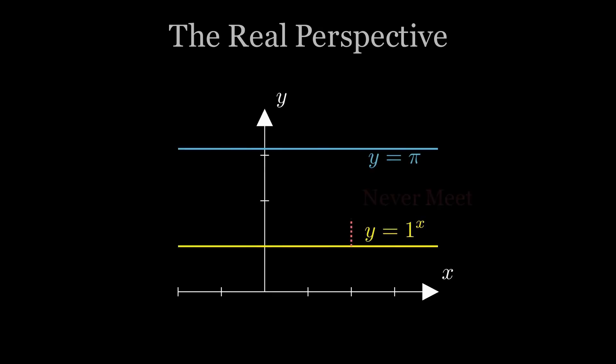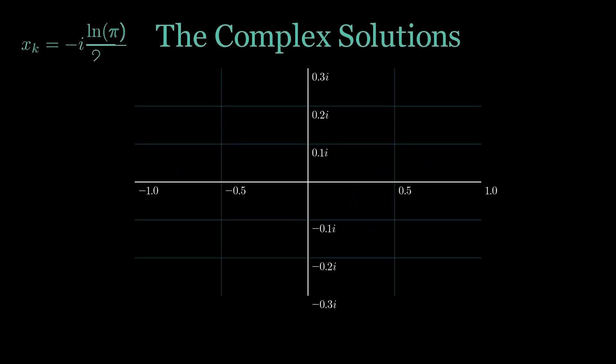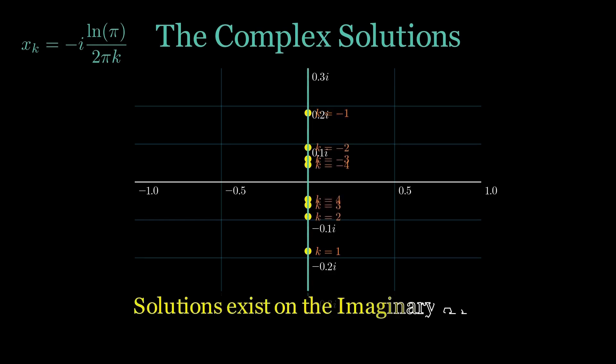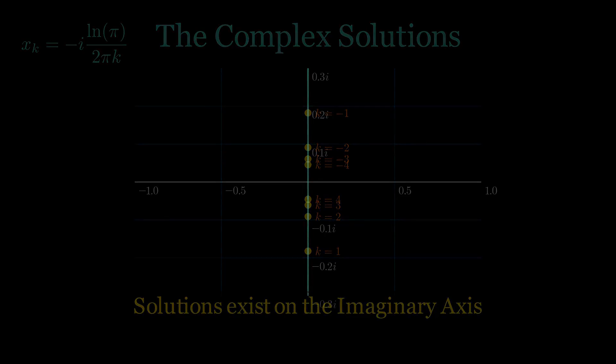In the real world, 1 to the x is always 1. π is a flat line above it. They never meet. But in the complex world, the story changes. Because log of 1 isn't just 0, it can be 2πi times k. That creates a whole family of complex x values that make 1 to the x land exactly on π. So the impossible equation isn't wrong. It's telling you complex exponentiation has branches. Thanks for watching.